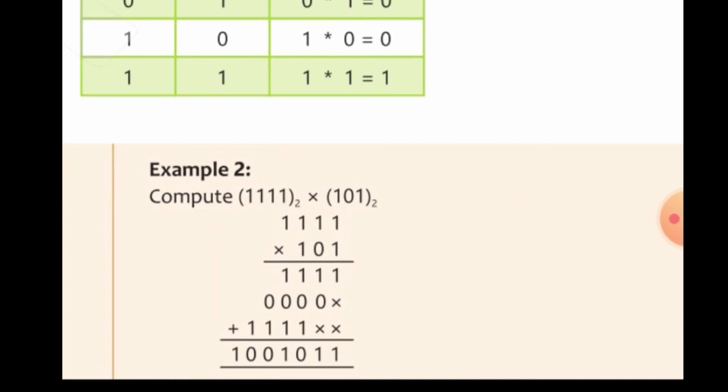Second time it is multiplied by 0, so we get four times 0. And third time again, we will get four times 1 and now it is time to add all the values.